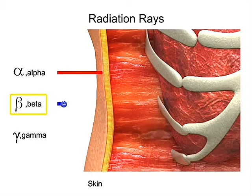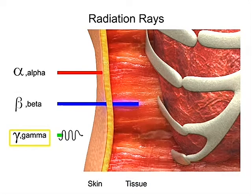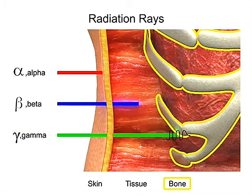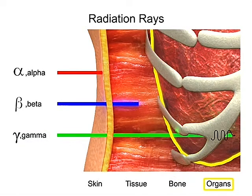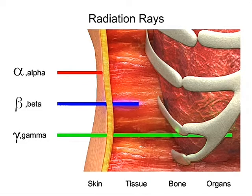Beta particles, however, are not stopped by the protective layer of skin and can damage deep sensitive tissue. Gamma rays likewise can penetrate deep into the body and cause harm. This is why it is necessary to wear specialized protective gear when working with radioactive materials.